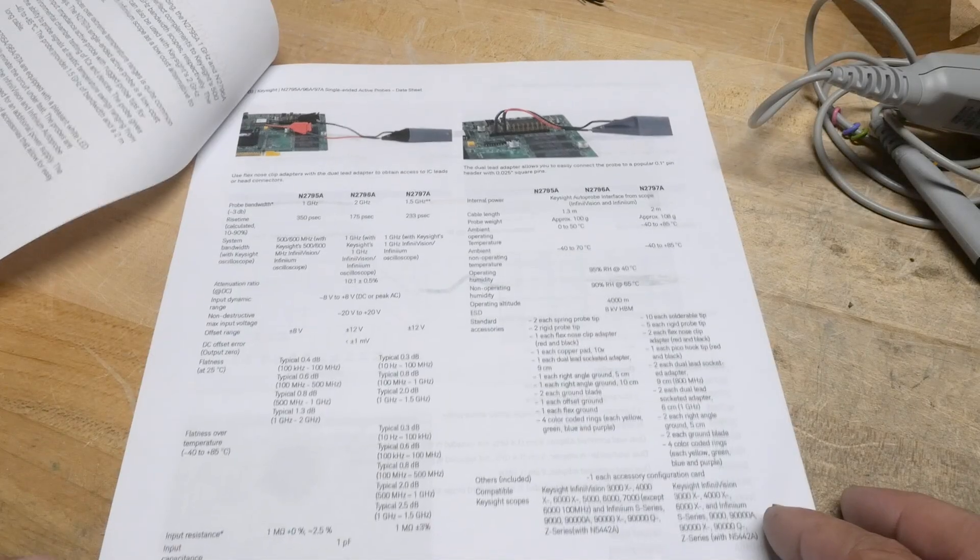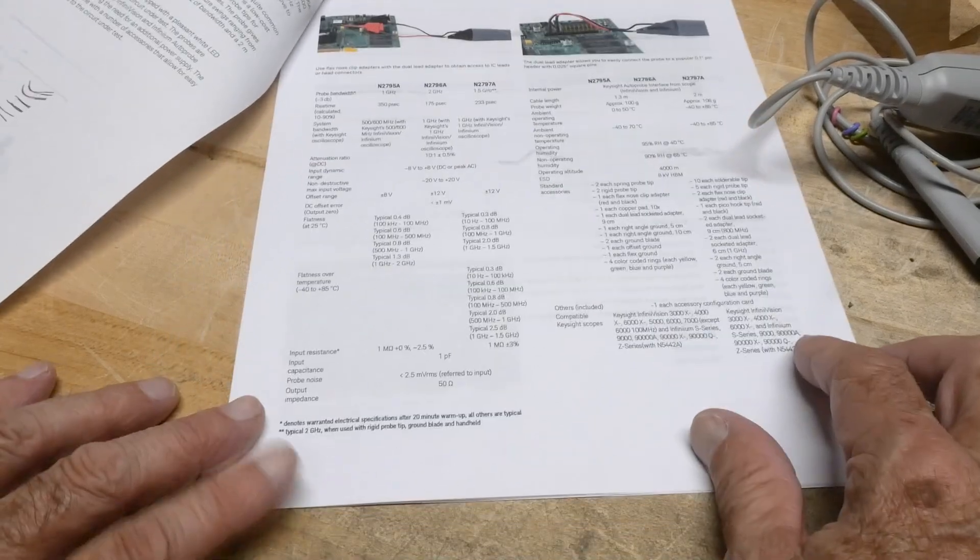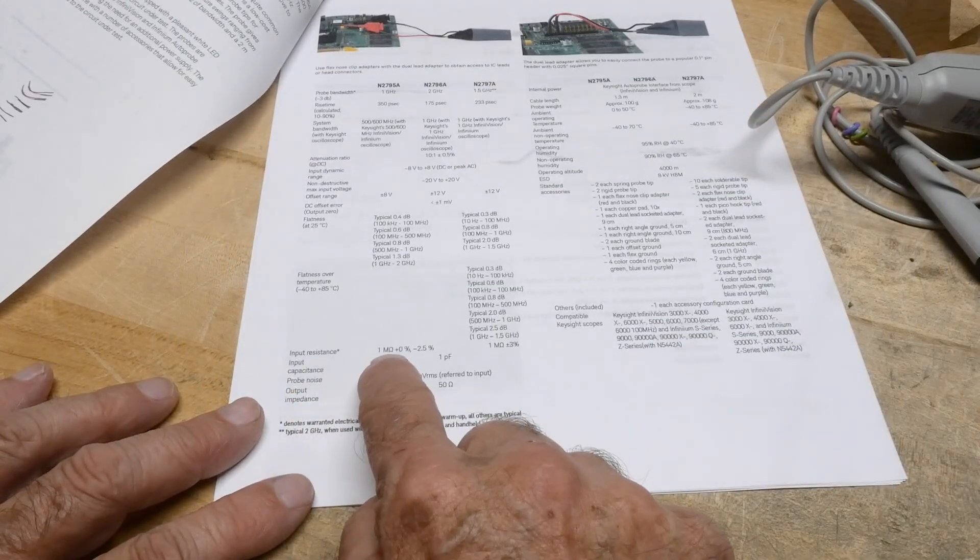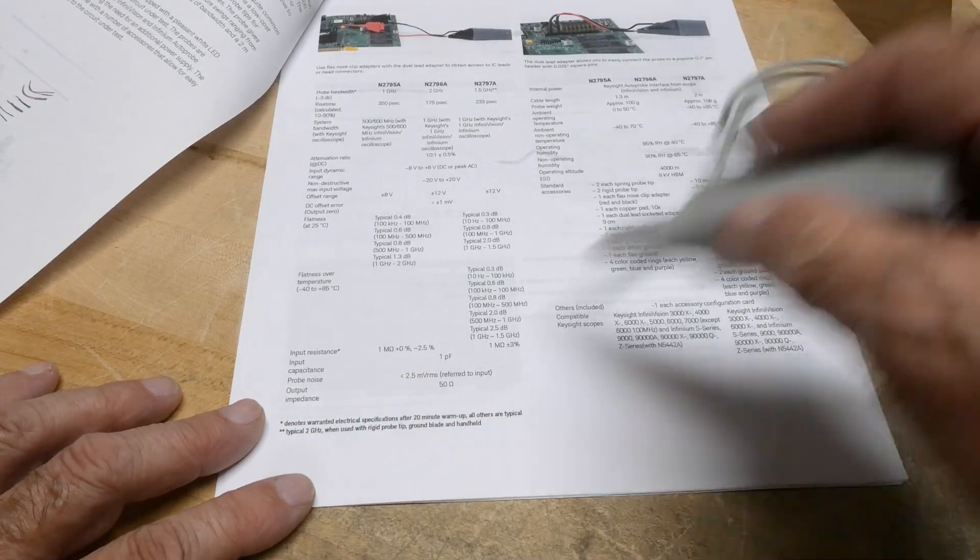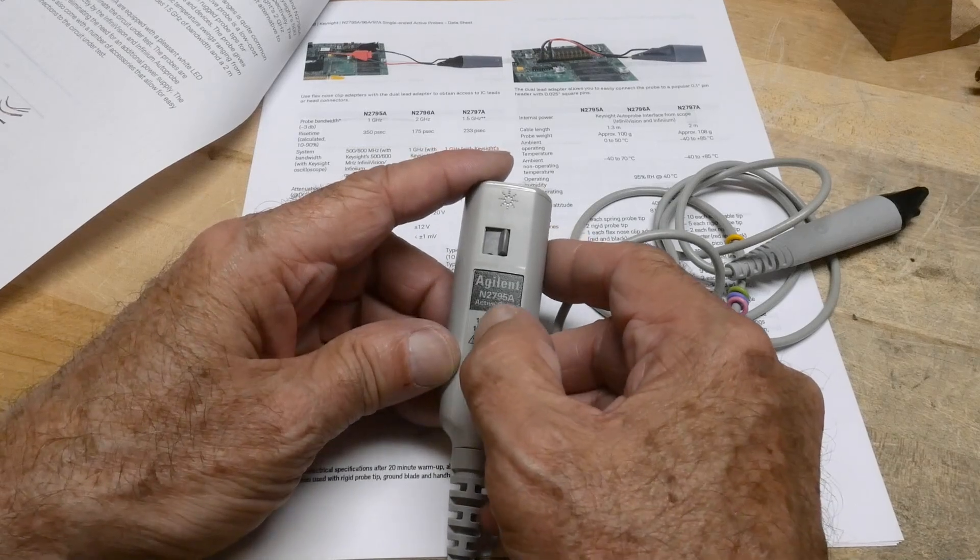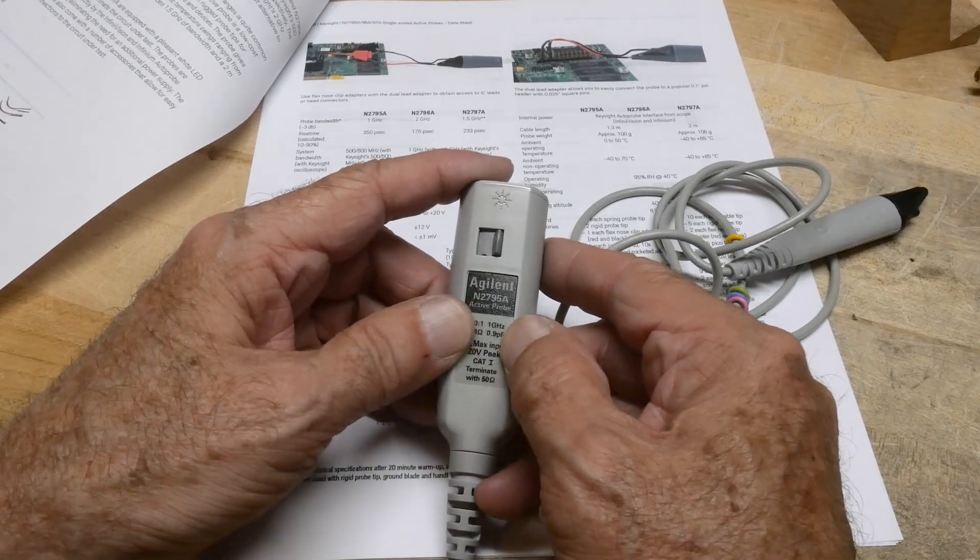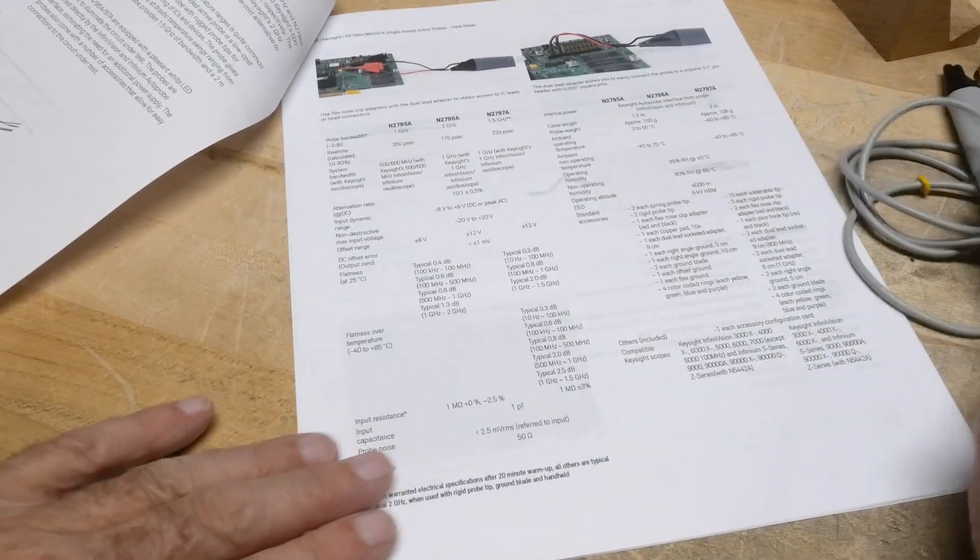Yeah, so it says the input resistance is 1 megaohm, and the capacitance is 1 picofarad. All right, so 1 megaohm, 0.9 picofarads. This one's marked as 0.9 picofarads.